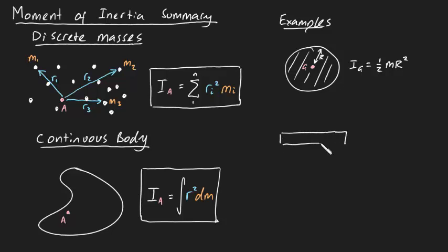The moment of inertia of a uniform thin rod, taken about its endpoint O, is given by IO is equal to one third mL squared.